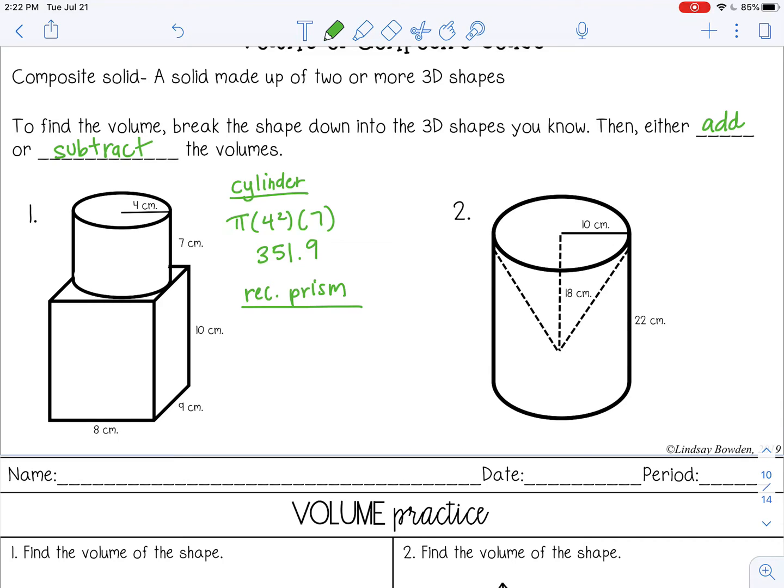And then for the rectangular prism, it's length times width times height. So 8 times 9 times 10, which gives me 720. So I'm going to add those together. And I'm just taking the number that was in my calculator for the cylinder just to give me a little bit more accurate answer. And I get 1071.85. I'm just going to round that to 9 centimeters cubed.